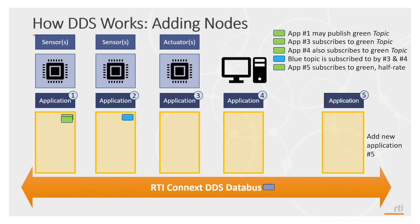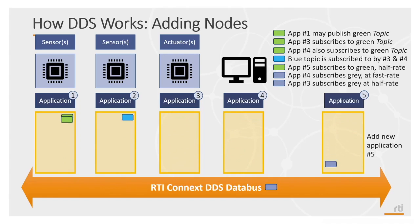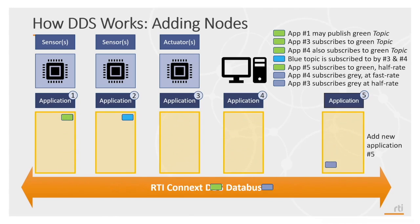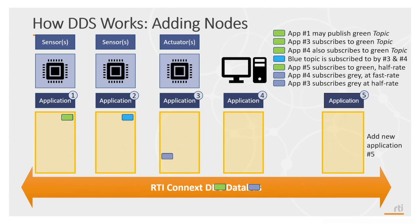Now in this image we see different applications each running on different systems, but it doesn't have to be the case. Each of these applications could be running on different systems or all on the same system. The sensor in application 2 and the actuator in application 3 could be controlled by the same piece of hardware. But these applications communicate with each other the same way, regardless of how the actual system is architected. Applications existing on the same hardware communicate at the application layer the same way as applications that exist across a network.